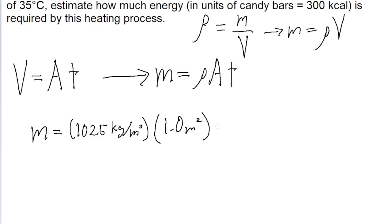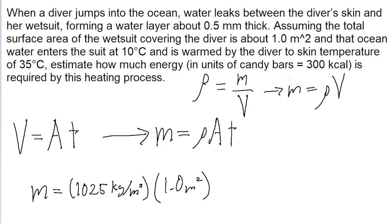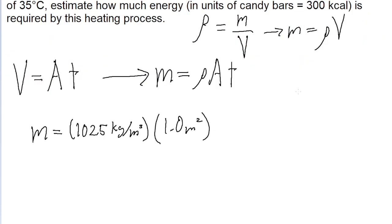Then we're multiplying it by the thickness of the water, which the problem tells us is 0.5 millimeters thick, so we got to convert that into meters. So that's 0.5 millimeters or 0.5 multiplied by 10 to the power of negative 3 meters. And if we put all this into a calculator, we find a mass of about 0.5125 kilograms.